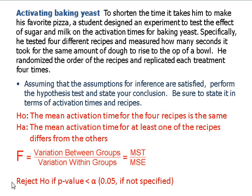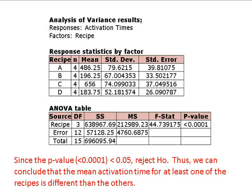The decision rule is: reject H-naught if the P-value is less than whatever alpha is given. We conducted that hypothesis test via StatCrunch and received these data. The P-value is less than 0.0001, which means we found an F-ratio of 44, which is very rare if the mean activation times of the four recipes are truly the same. Since that P-value is less than 0.0001 — less than 0.05, the level of significance — we reject H-naught.